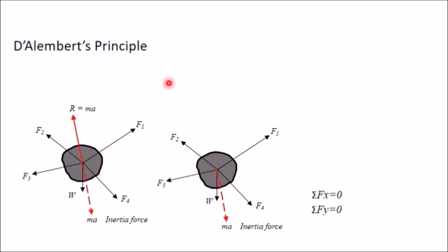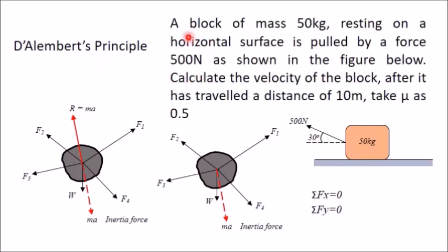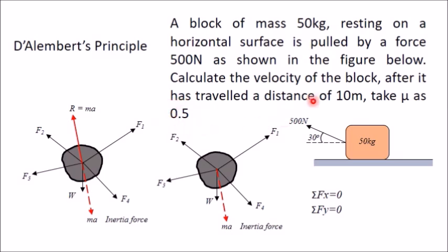To explain D'Alembert's principle with an example, I have taken this problem. A block of mass 50 kg resting on a horizontal surface is pulled by a force of 500 Newton at an angle of 30 degrees from horizontal towards the left direction. We have to determine the velocity of this block after it has traveled a distance of 10 meters. There is friction between this block and the horizontal surface, and the coefficient of friction is given as 0.5.